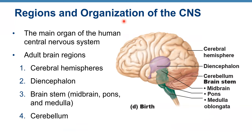Now moving to the anatomy of the brain. The brain is the main organ of the human central nervous system, and the adult brain consists of four regions: the cerebral hemispheres (right and left), the diencephalon, the brainstem, and the cerebellum. The brainstem itself is made of three parts: medulla oblongata, pons, and midbrain.